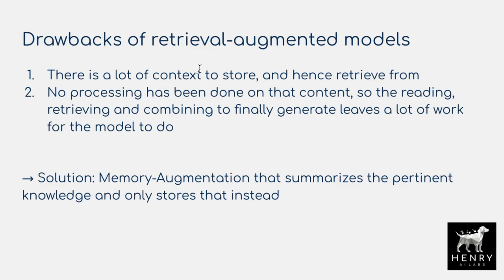The second drawback is that no processing has been done on the retrieved content. Reading, retrieving, and combining to generate something leaves a lot of heavy lifting for the model — it must process raw Wikipedia paragraphs or scientific paper excerpts just to make the information digestible for later reasoning layers. The solution is a memory augmentation model that summarizes the pertinent knowledge and only stores that instead. Less processing needs to be done on the summary, there's less to store and retrieve, and it has less of a memory bottleneck overall.